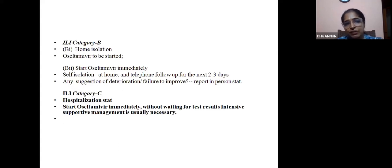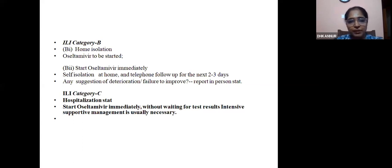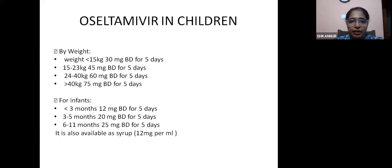Category B: home isolation but oseltamivir is started for both B1 and B2. Self-isolation at home, monitor over the phone, and if there is any deterioration, they have to report. Category C definitely needs hospitalization — start oseltamivir immediately without waiting for test results, and intensive supportive management is usually necessary. The oseltamivir dose in adults is 75 mg BD for 5 days, with weight-based dosing in children.